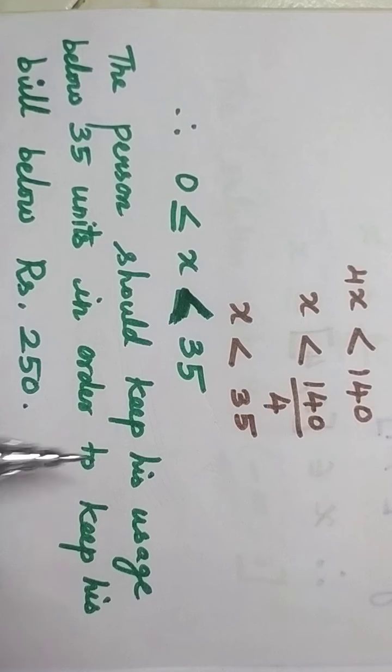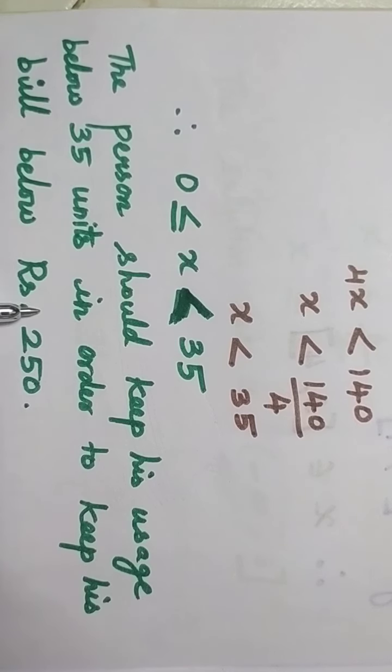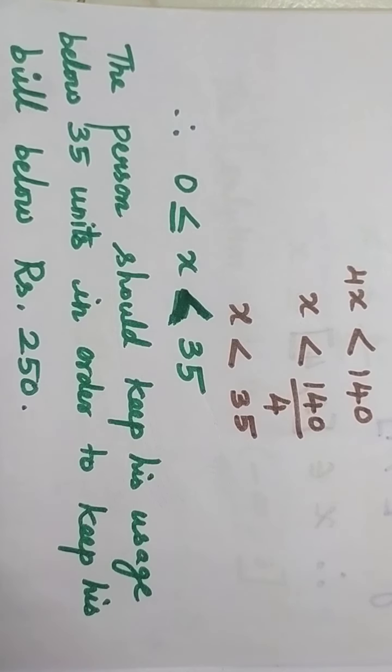So the person should keep his usage below 35 units in order to keep his bill below rupees 250. I hope you understand this, students. Thank you.